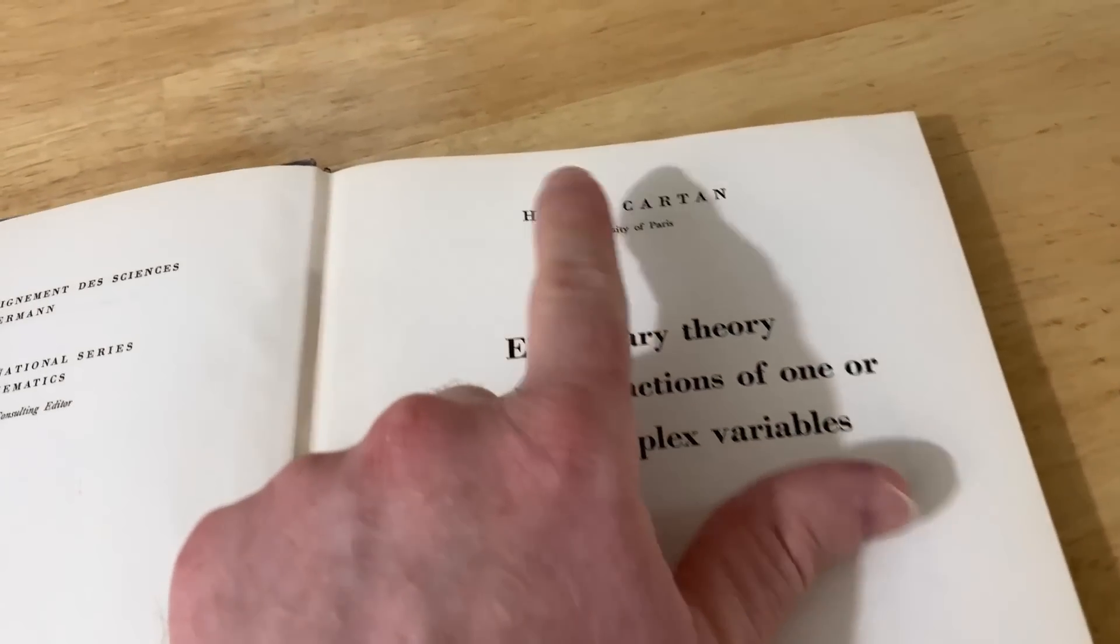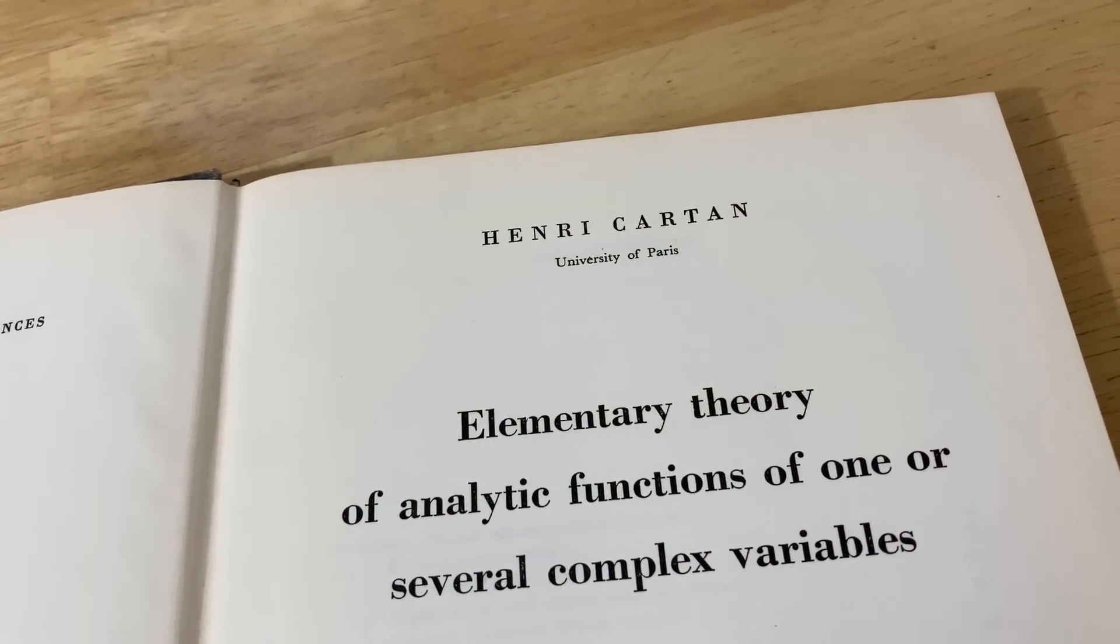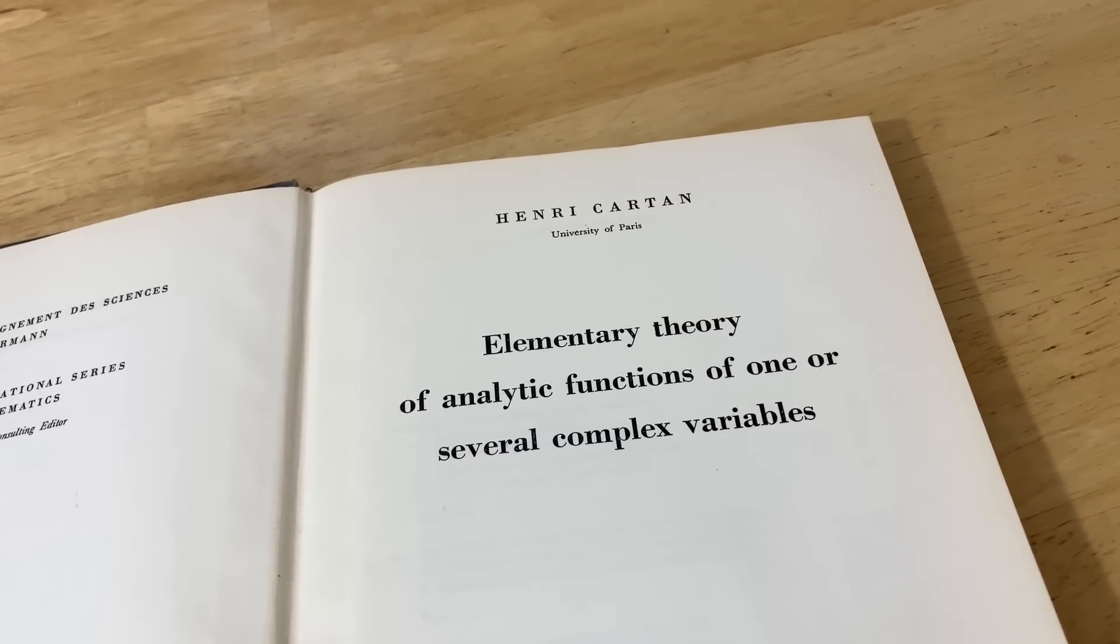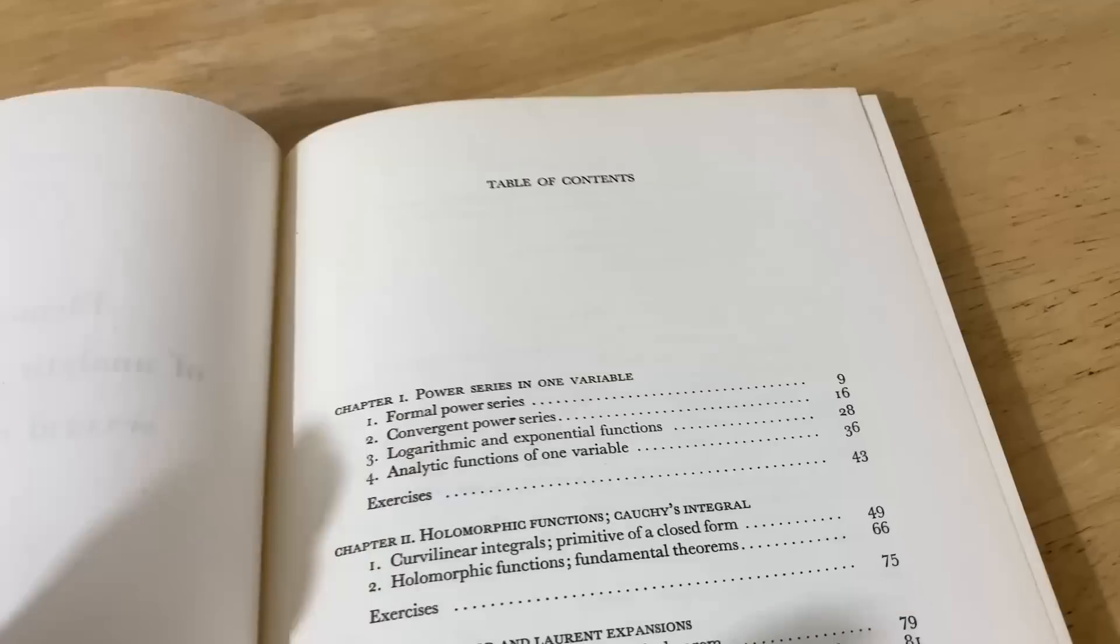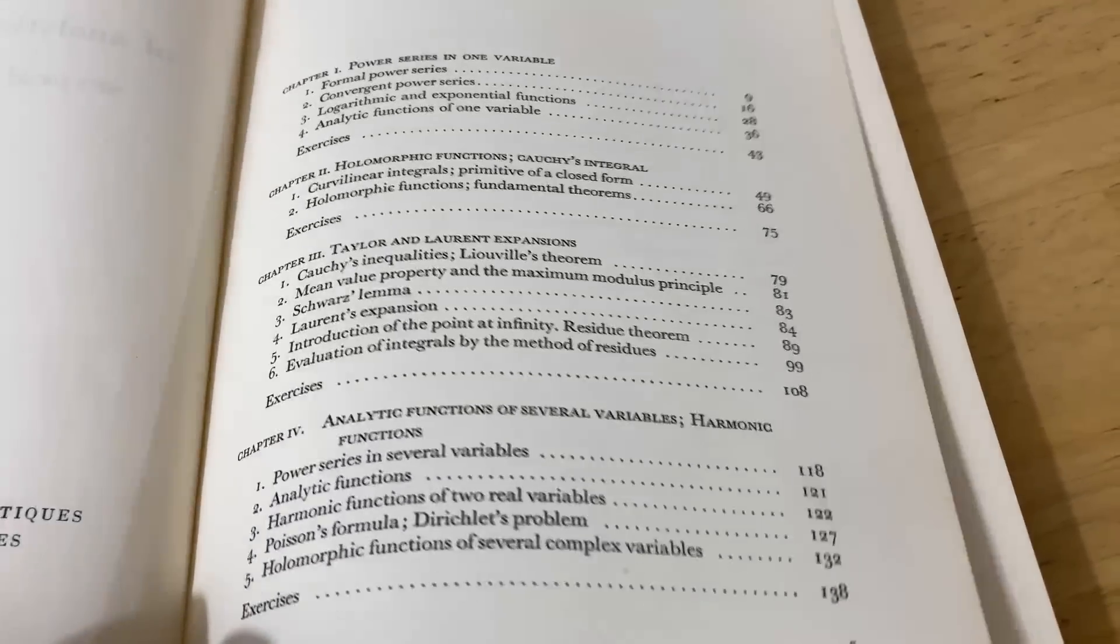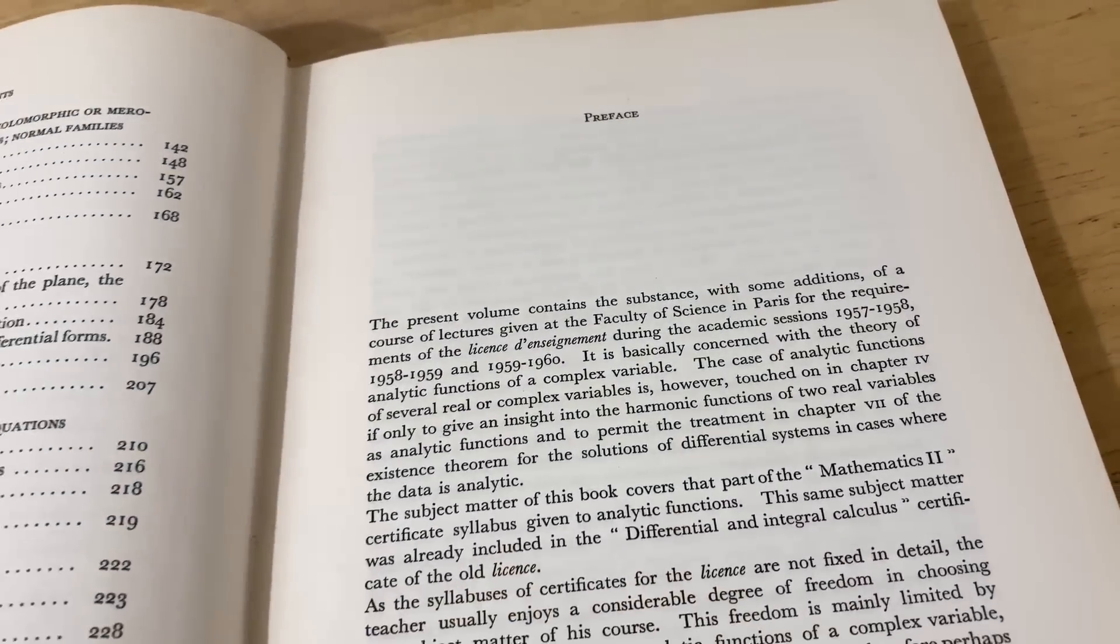Anyways, this is Elementary Theory of Analytic Functions of One or Several Complex Variables by the legendary Henri Cartan. And I wish I knew offhand how old he lived to be. He died several years ago. I think he lived to be 104. I don't know for sure, but definitely over 100 years old. And he was a short little French man who was brilliant and wrote an incredible book.